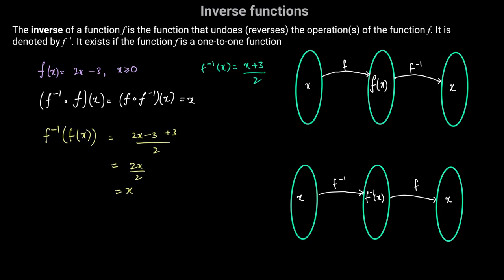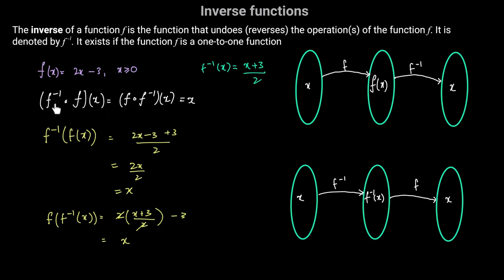Now computing f of f inverse of x: we know f of x equals 2x minus 3, but now the input is f inverse of x, which is (x plus 3) divided by 2. So we get 2 times (x plus 3) divided by 2, minus 3, which gives x plus 3 minus 3, and that returns x. So we've proved these two functions are indeed inverses of each other.